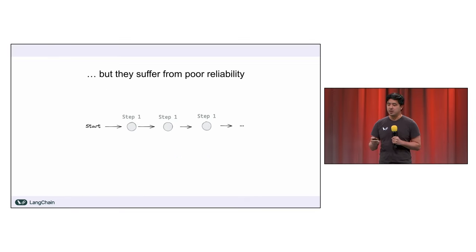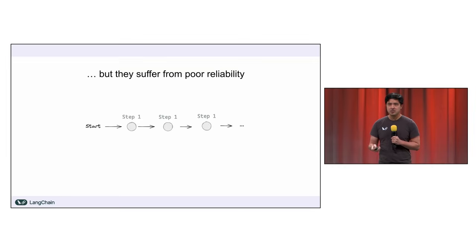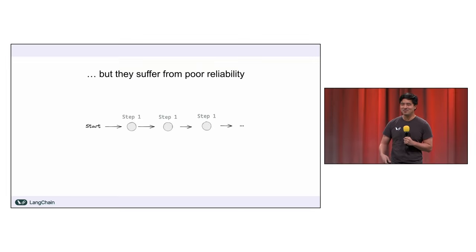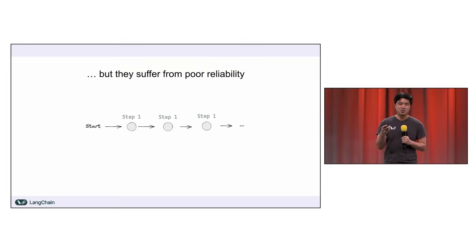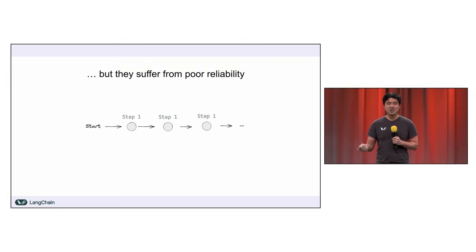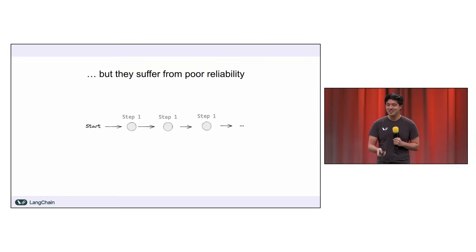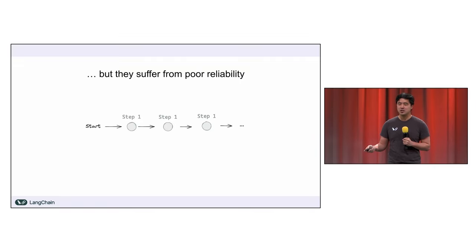But reliability was a really big problem here. The models at the time were way too finicky. You could do cute things — maybe if you've tried Langchain before, something like: who is Leonardo DiCaprio's girlfriend and what is her age raised to the 0.5 power? Give it a web search tool and a calculator and it can do it. But it was nowhere near reliable enough for production, though people tried very hard and became a little bit frustrated.